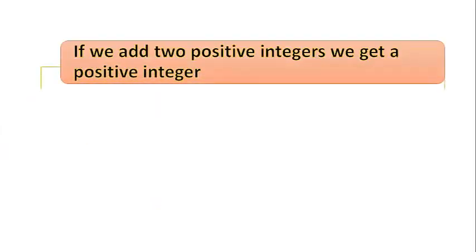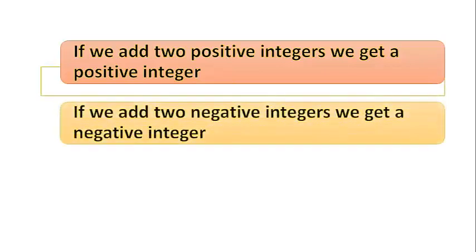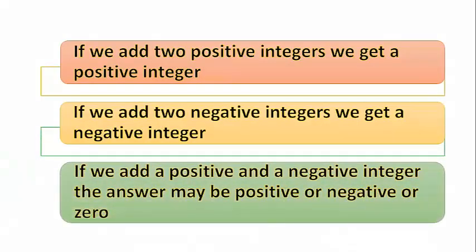If we add two positive integers, we get a positive integer. If we add two negative integers, we get a negative integer. If we add a positive and negative integer, the answer may be positive, negative, or zero.